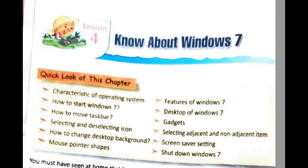This is lesson number four about Windows 7. In the previous video we learned about the characteristics of the operating system, how to start Windows 7, features of Windows 7, and the desktop of Windows 7. In this video we are going to learn about how to move the taskbar, gadgets, selecting and deselecting icons, selecting adjacent and non-adjacent items, how to change the desktop background, screen saver settings, mouse pointer shapes, and how to shutdown Windows 7.